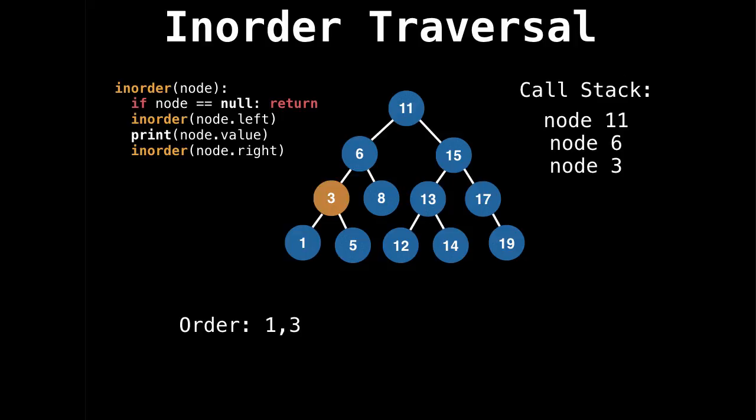And then I print three because I've explored three's left subtree. Now we go right now. And I've explored both subtrees, so I can print five, and I recurse. And I can print six because I've explored six's left subtree. And I can go to eight, then recurse, then print 11.